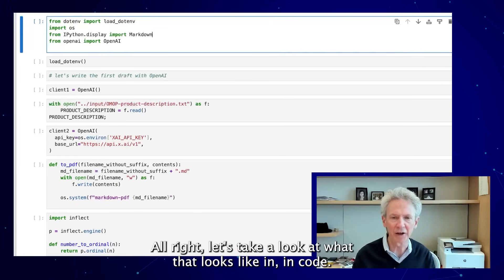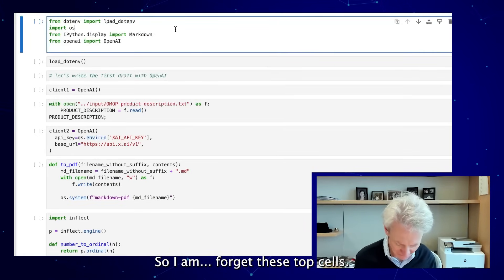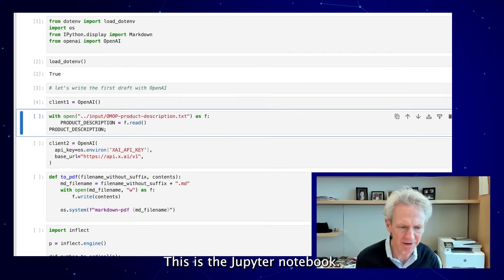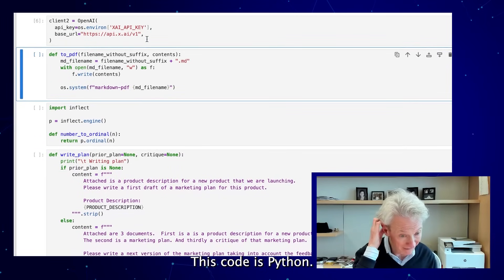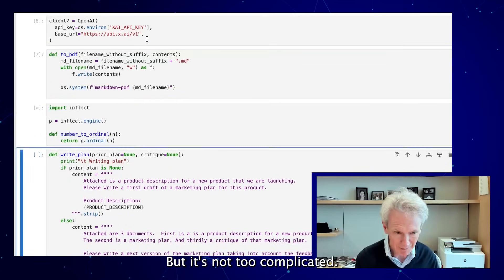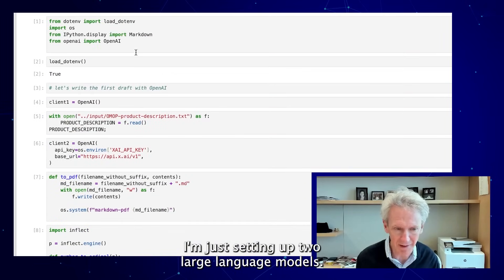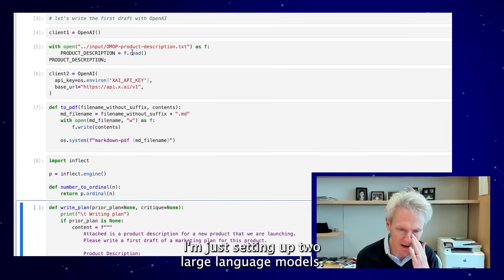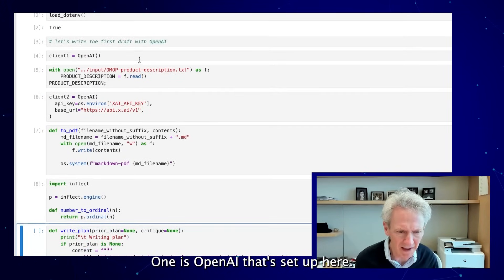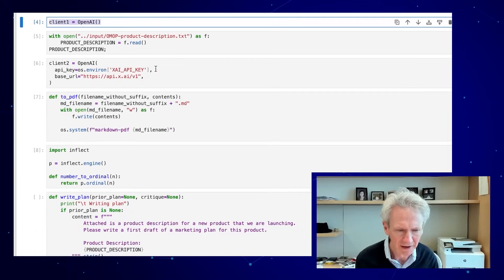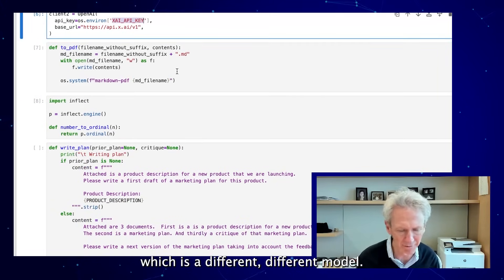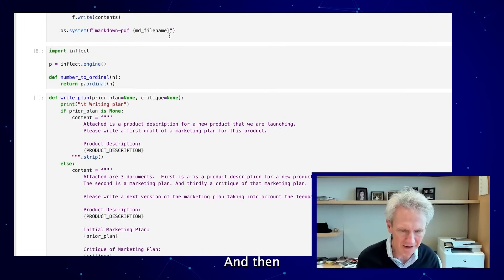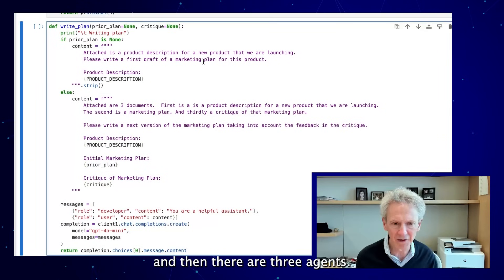Let's take a look at what that looks like in code. This is a Jupyter notebook. This code is Python, but it's not too complicated. I'm just setting up two large language models. One is OpenAI that's set up here and the other is XAI, which is a different model.